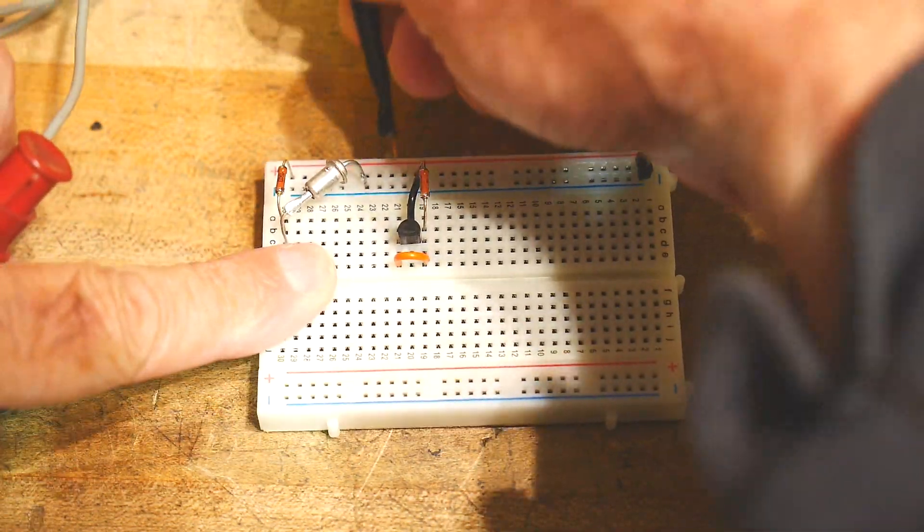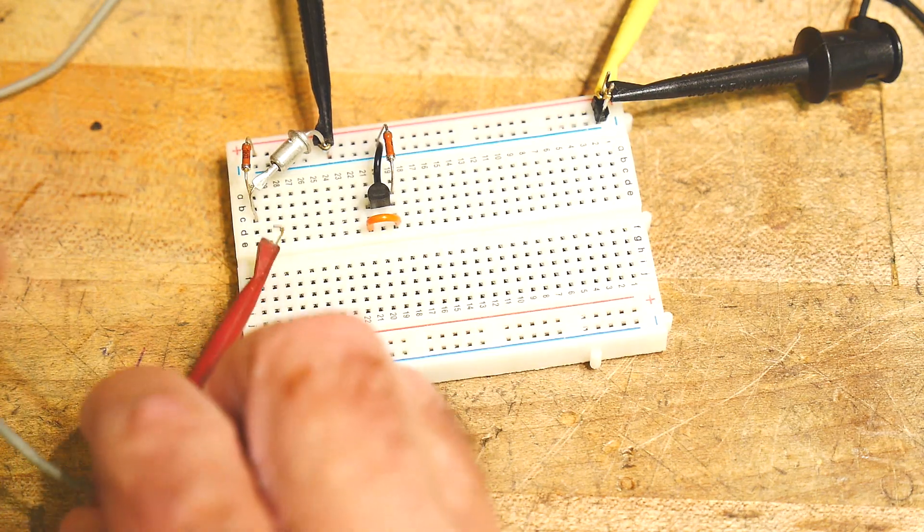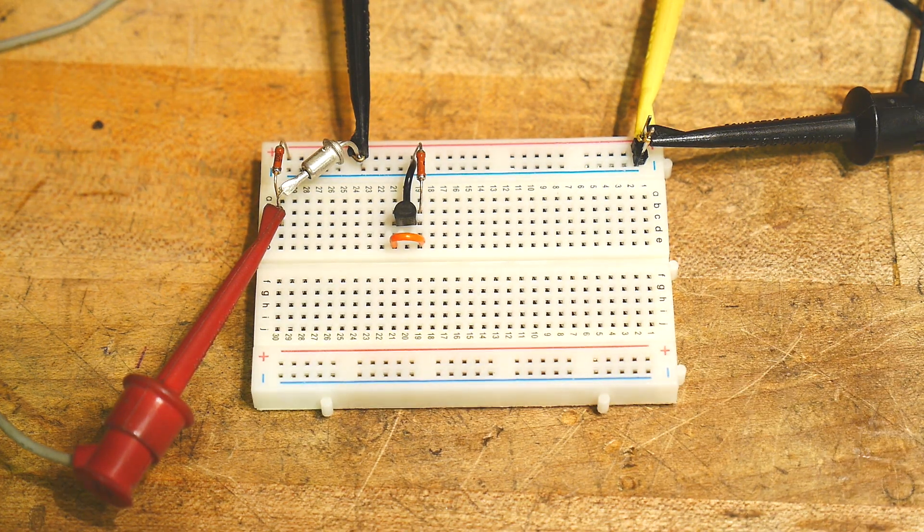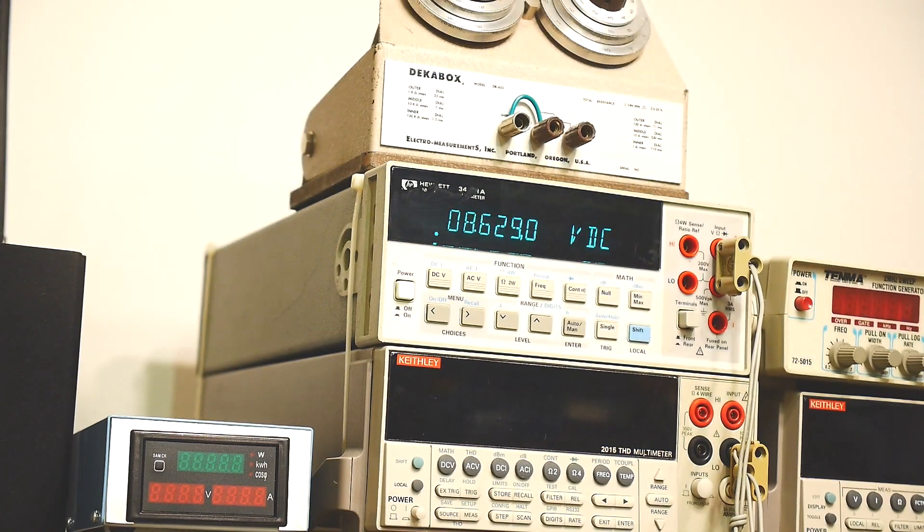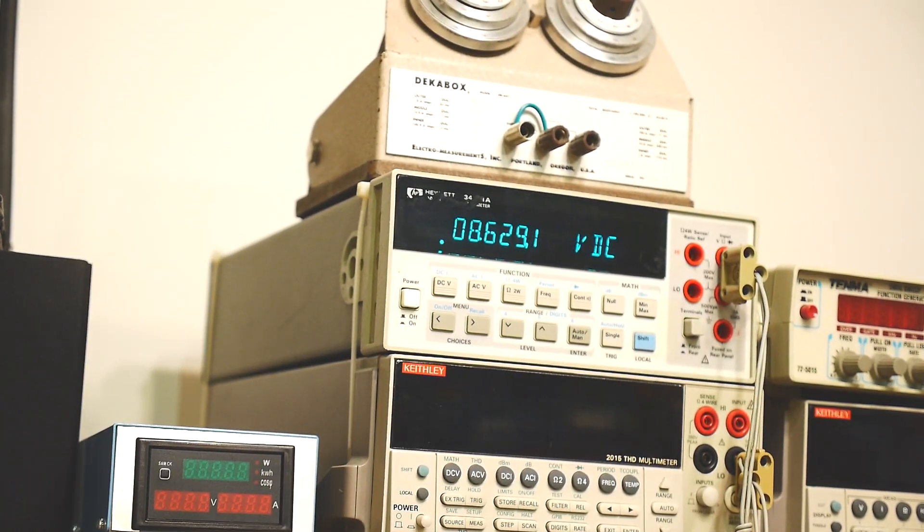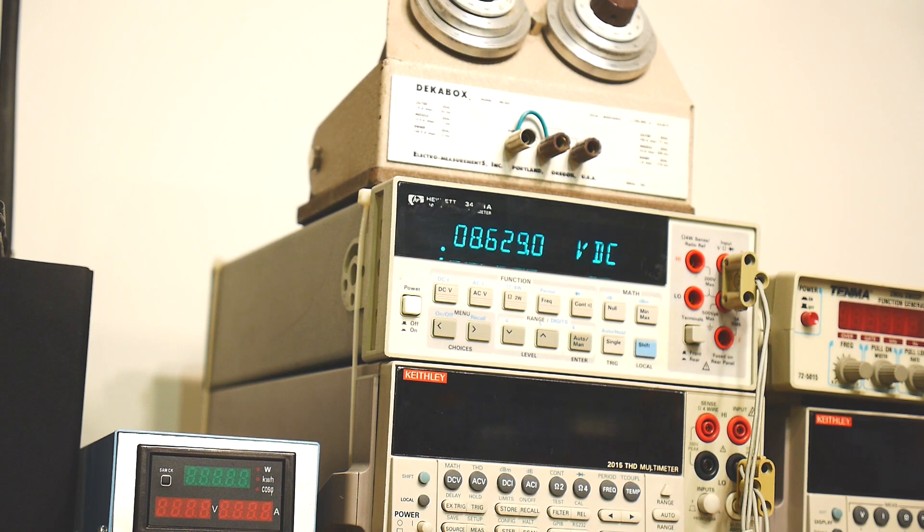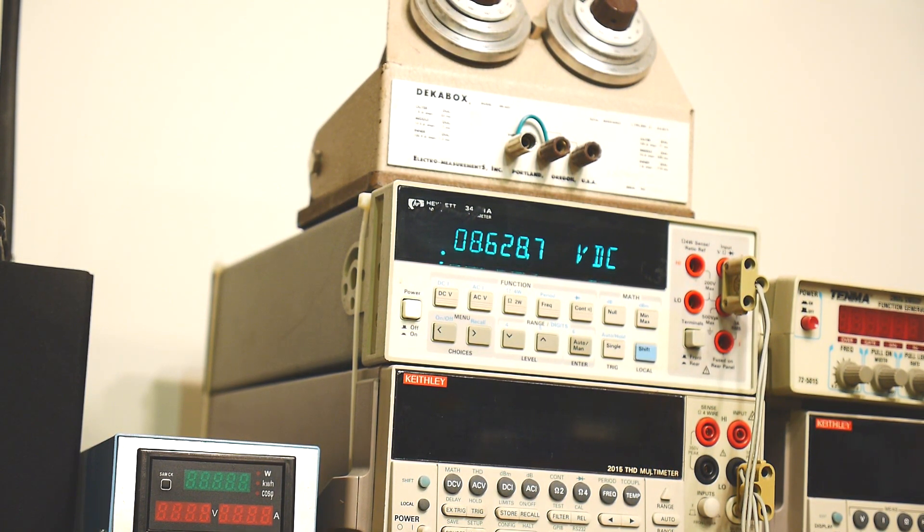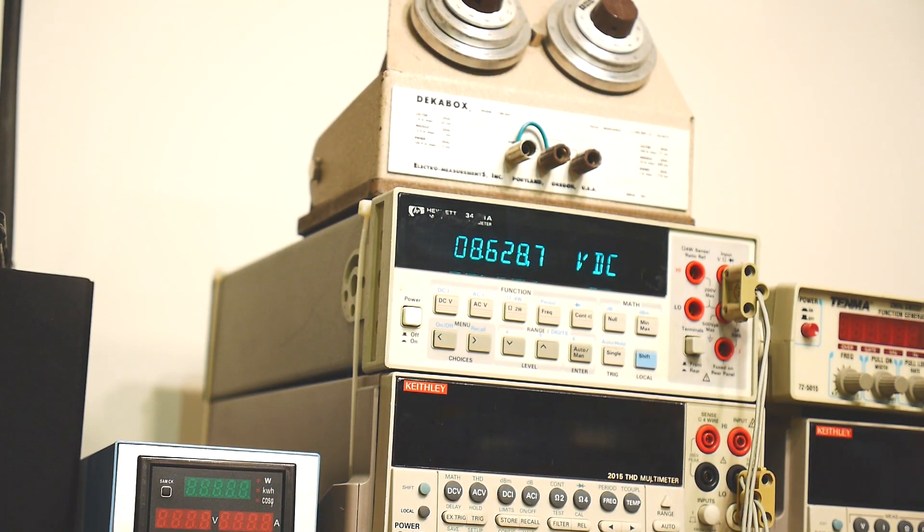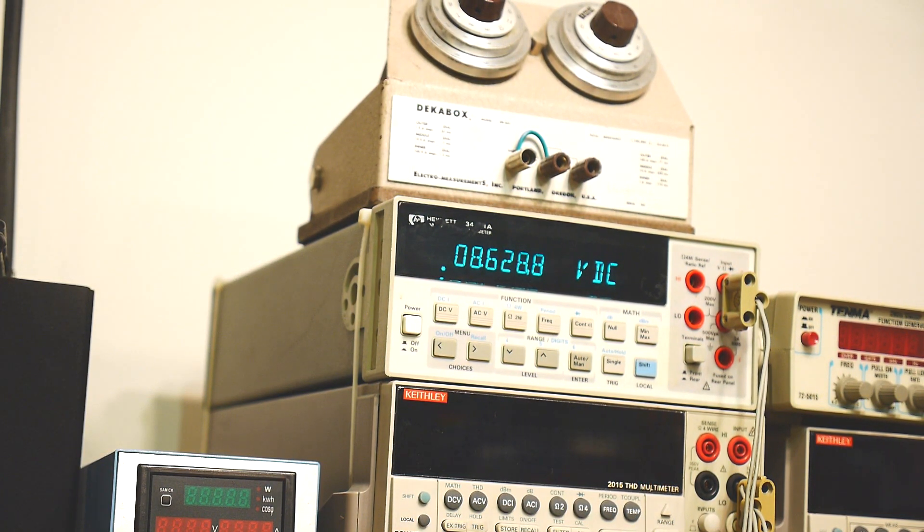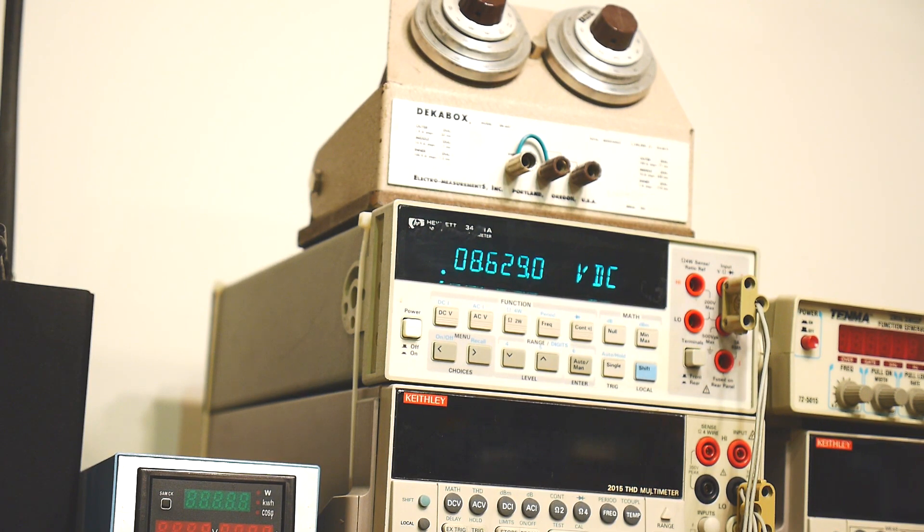We'll measure across the first Zener diode with a voltmeter and we'll see how it does. Come up here to my 6.5V voltmeter. We can see it's quite stable. 0.0001V, so that's a tenth of a millivolt, and it's varying about a tenth of a millivolt. So quite good.